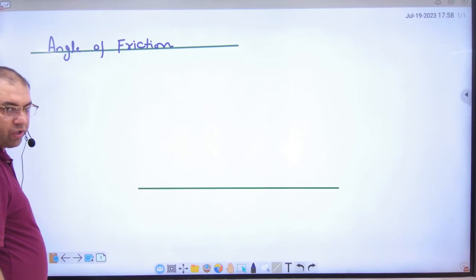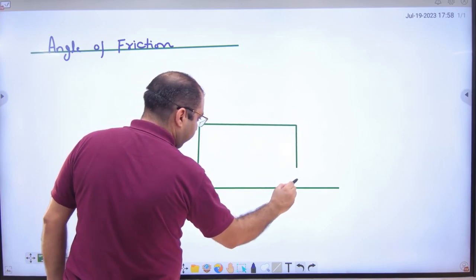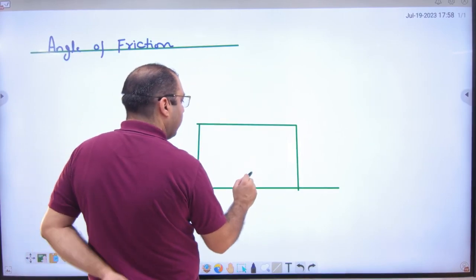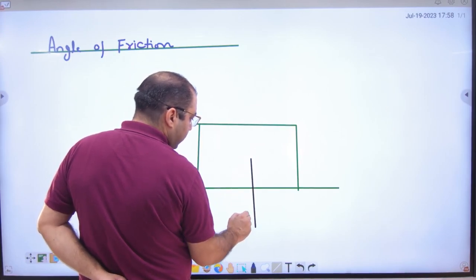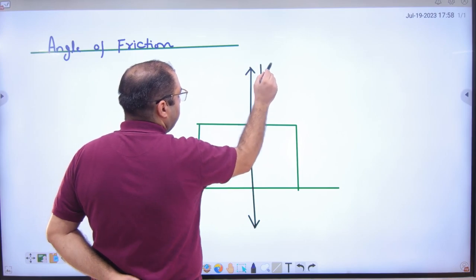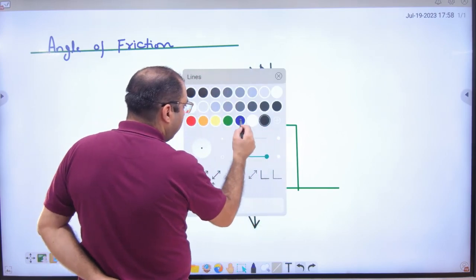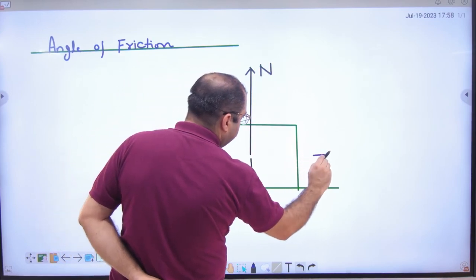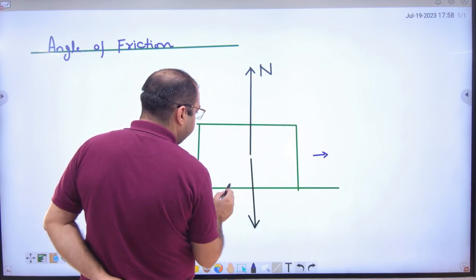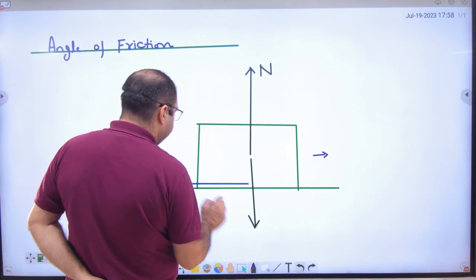The angle of friction: this is ground and this is your block. The weight of this block is where is it? It is down. So what is the normal reaction? This is contact force. We can say that if this body goes forward, then where will friction act? It will act on the back. This is your friction.